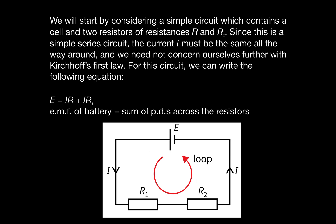The expression is E equals IR1 plus IR2. From Ohm's law, V equals IR, so the voltage across R1 is IR1 and across R2 is IR2. The electromotive force provided by the battery equals the sum of the potential differences: E equals IR1 plus IR2. This is the basis of the second law.